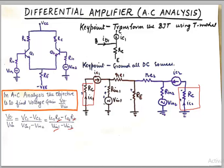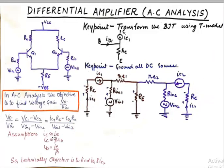For that we will use some approximations. And the assumptions are IC is equivalent to almost IE. IC can be written as beta times IB. So IB can be written as IE upon beta. So whenever we find IE we'll say that we have found IC also. So technically the objective boils down to finding IE1 and IE2.